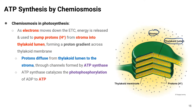The light-dependent reaction occurs in the thylakoid, while the Calvin cycle occurs in the stroma. Also shown here are protons or hydrogen ions, symbolized as gray circles. From the figure, we can see there is a high concentration of protons within the thylakoid lumen compared to the stroma. This is important because it contributes to ATP production by chemiosmosis.